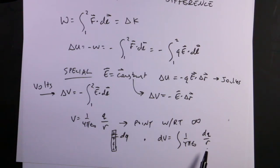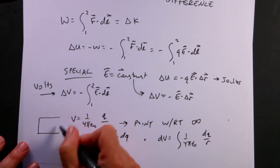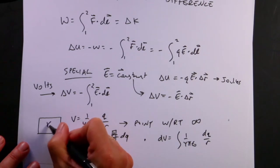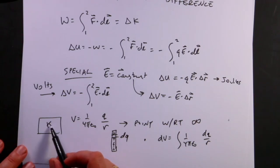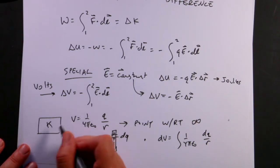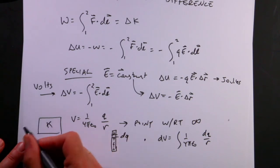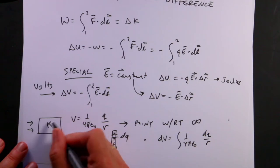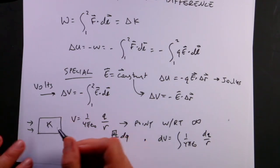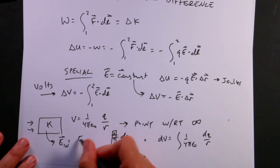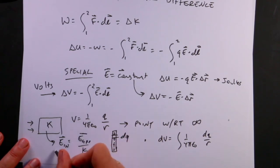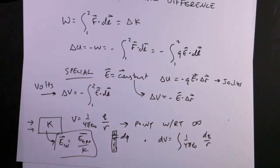Dielectrics: if I have an electric field applied to an insulator with dielectric constant κ, the field polarizes the material, which creates an opposing net field inside. So E_inside = E_applied / κ. Different materials have different dielectric constants.